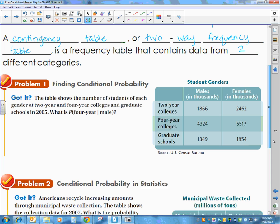We have an example here. The table shows the number of students of each gender at two-year and four-year colleges and graduate schools in the year 2005. They want us to find out what is the probability of four-year.